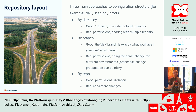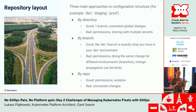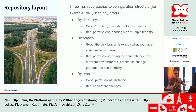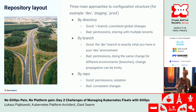We decided to do it another way and started to figure out what are the general ideas about layout of a GitOps repository. It turns out that there are three main ones: by directory, by branch, and by repository layouts.